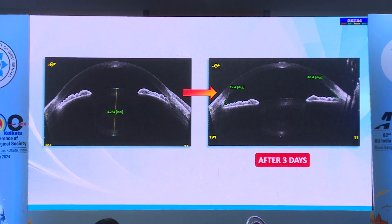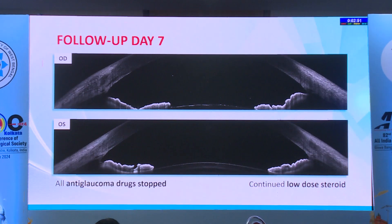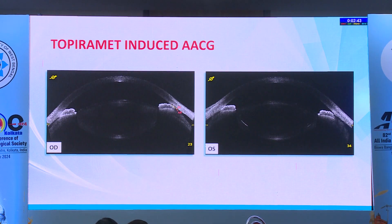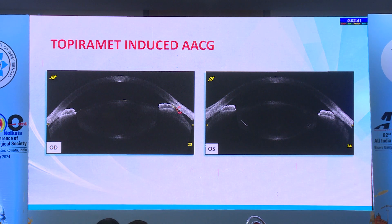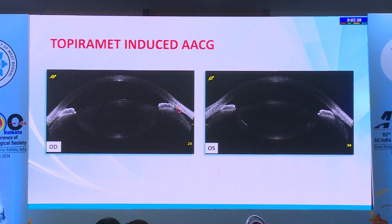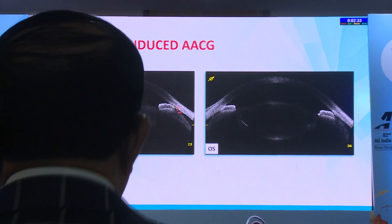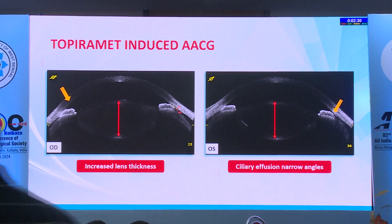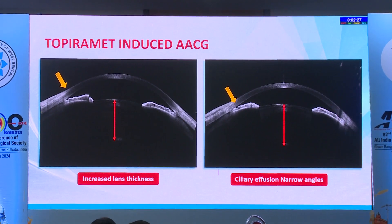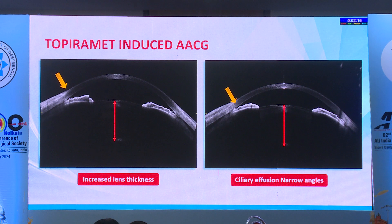She improved within three days — the thickness reduced and angles opened up. By day seven, anti-glaucoma medications were completely stopped and she was shifted to low-dose steroids. By one month, she came back to 6/6 vision. These were two more cases of topiramate-induced angle closure. Anterior segment OCT helps you find where the problem is and the etiology. It mostly helps in explaining and counseling the patient — compliance increases when you show them what the problem is. So ASOCT helps very well for treatment adherence.